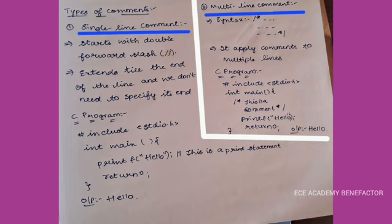Next is the multi-line comment. In that syntax, we have first the forward slash then an asterisk. We can write any number of lines and then we have to close it with an asterisk and forward slash. It applies comments to multiple lines.